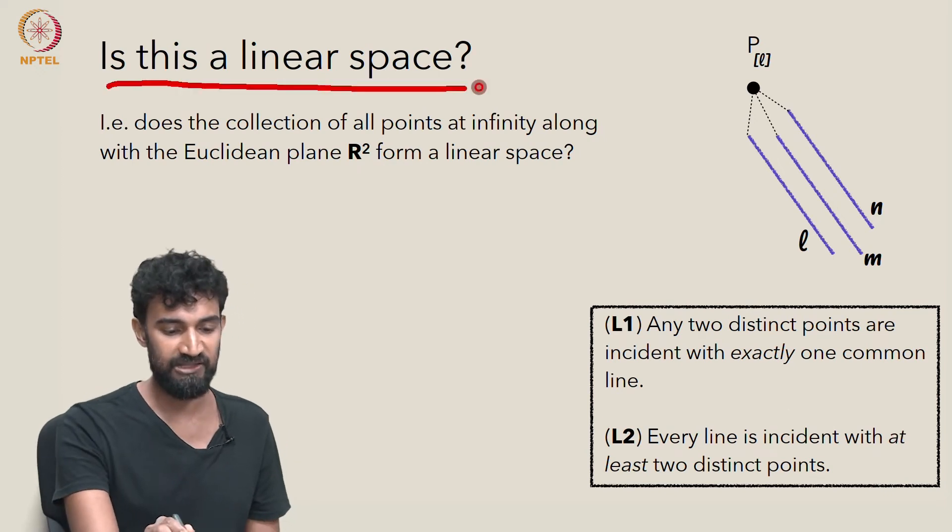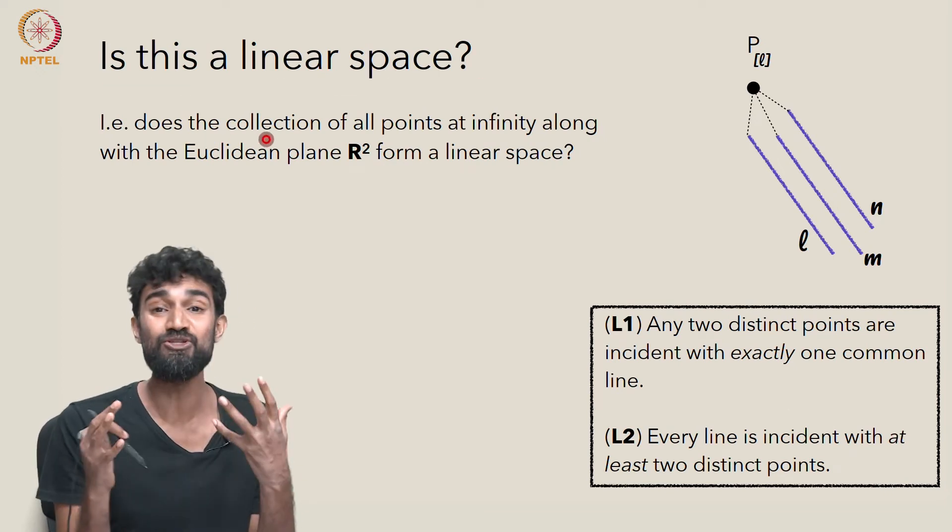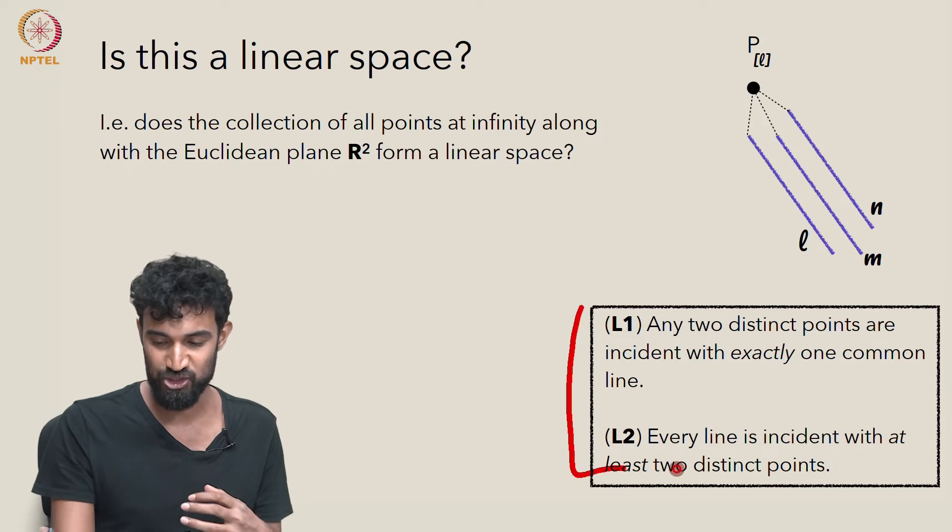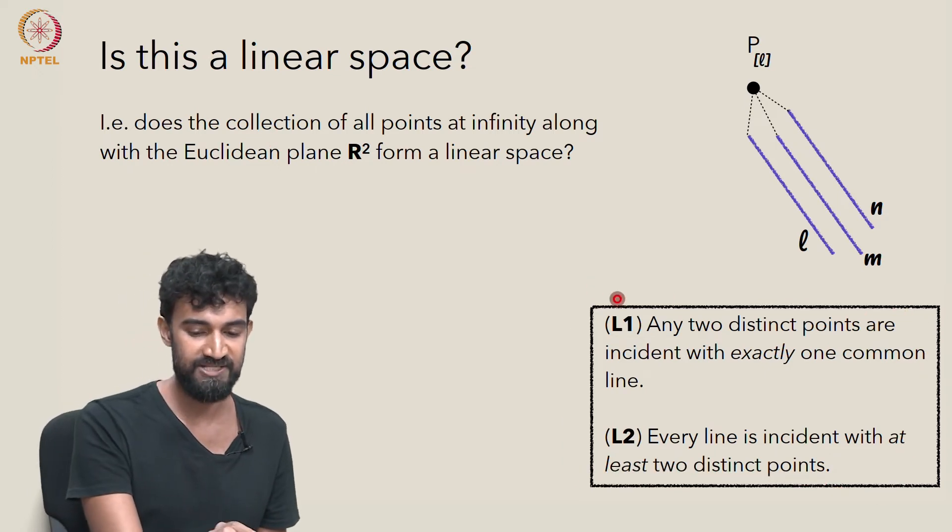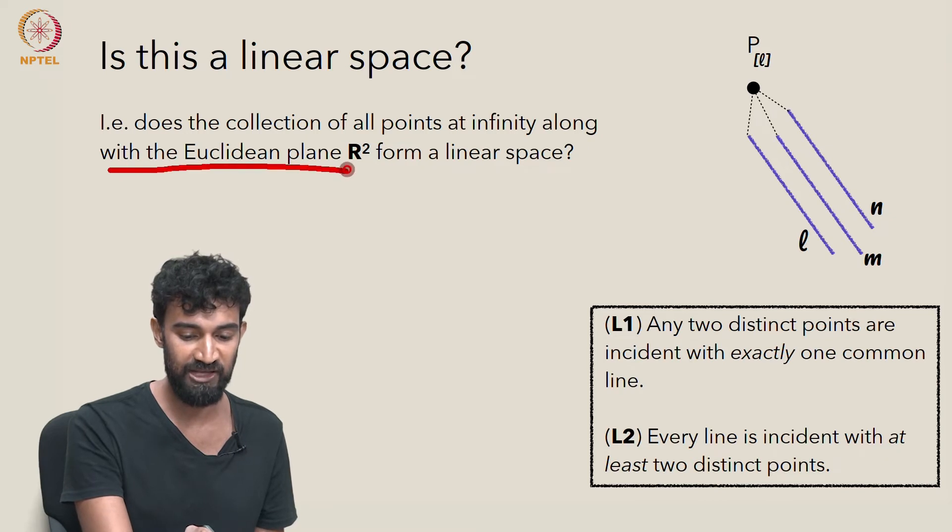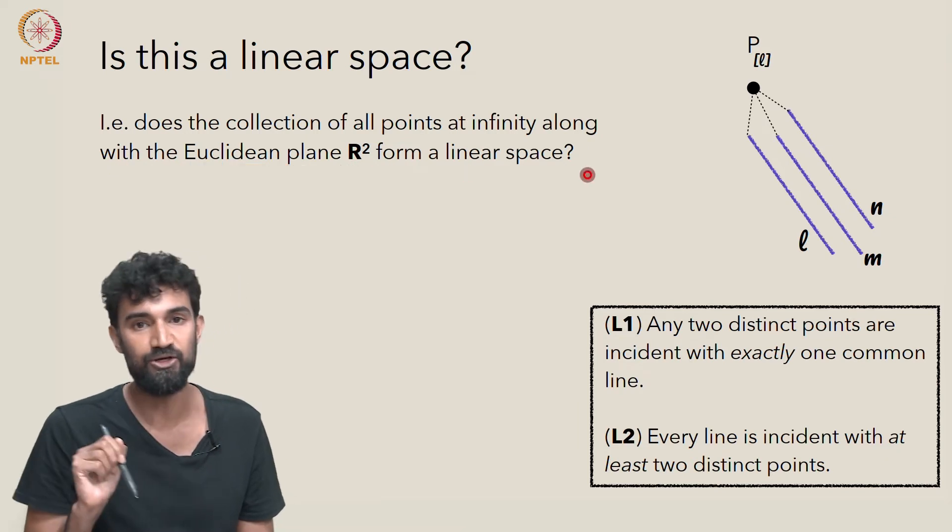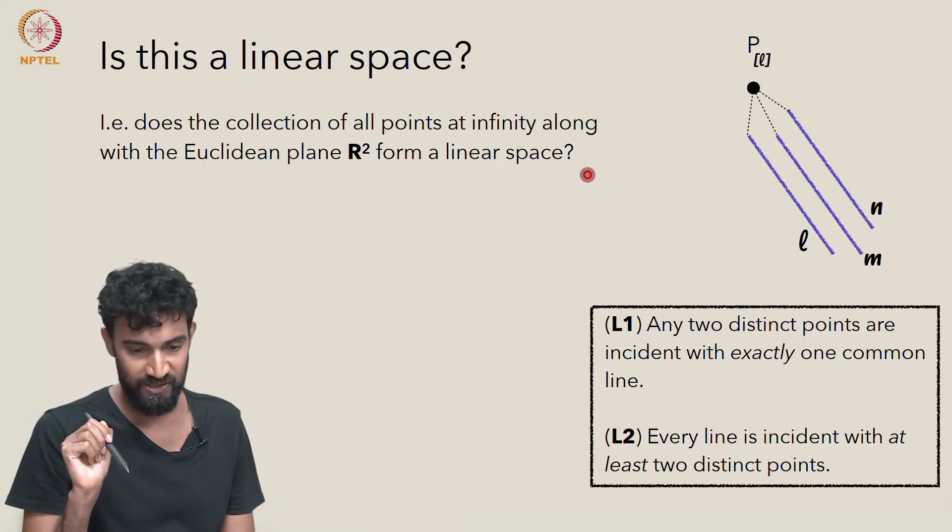So the question is, is this a linear space? Does it satisfy these most fundamental axioms that we want to make sure are satisfied? Does the collection of all points at infinity, along with Euclidean plane R², form a linear space?